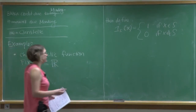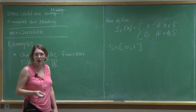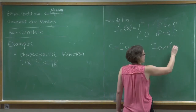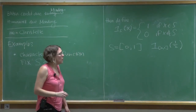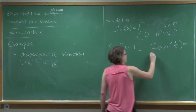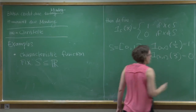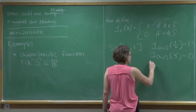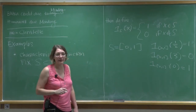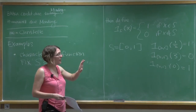For example, if S is the closed interval [0,1], I can evaluate the characteristic function on many different numbers. The characteristic function of 1/2 is 1, because 1/2 is in the set. But if I ask whether 3 is in the set, the function says no. And if I ask whether 0 is in the set, the function says yes — the endpoint is in the set because it's a closed interval.